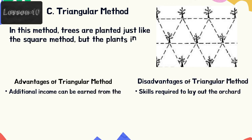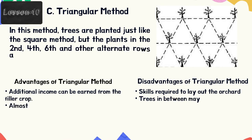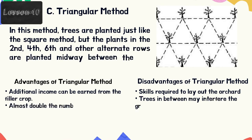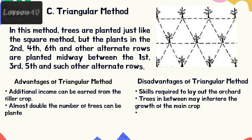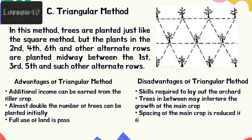Triangular method: in this method, trees are planted just like the square method, but the plants in the second, fourth, sixth and other alternate rows are planted midway between the first, third, fifth and such other alternate rows. This method has no special advantage over the square method except providing more open space for the tree and for intercrops.